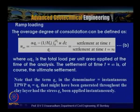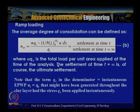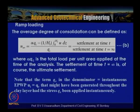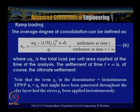The average degree of consolidation is: Uav = [α·qc − (1/ht)∫₀ʰᵗ u dz] / qc, where α·qc is the total load per unit area applied at the time of analysis. Here qc in the denominator equals the instantaneous excess pore water pressure that would have been generated had the stress qc been applied instantaneously. The factor α accounts for partially generated pore pressure under ramp loading.